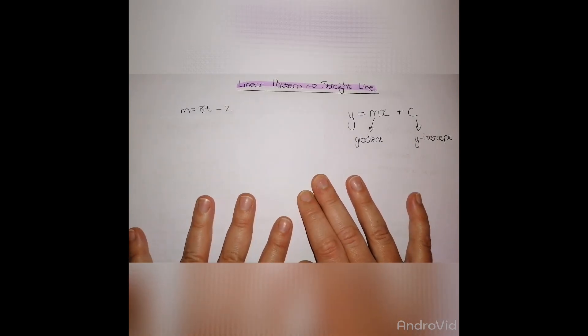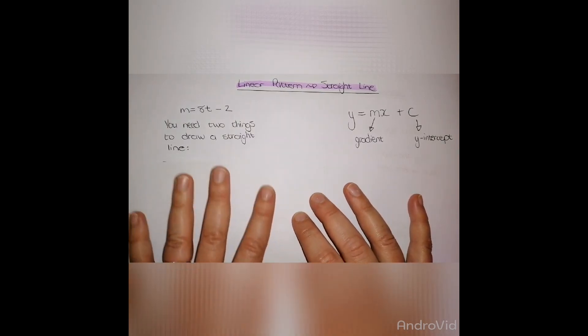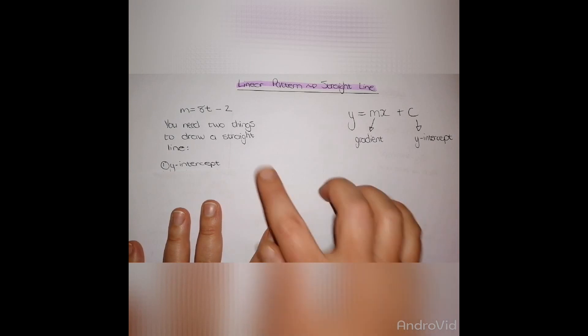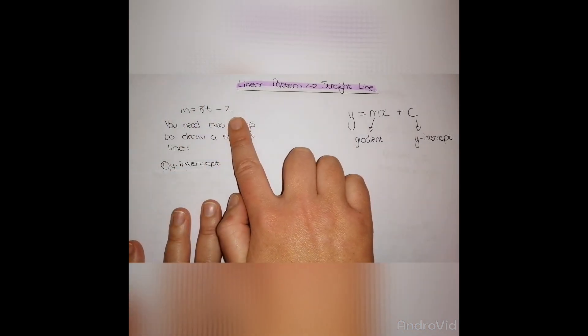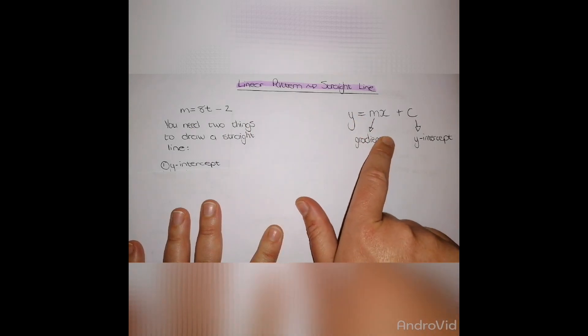The way we draw a straight line, we need two different things. First of all, the y-intercept. When we look at this equation, we can see that the rule I found in my linear pattern is exactly the same format as the basic straight line equation.